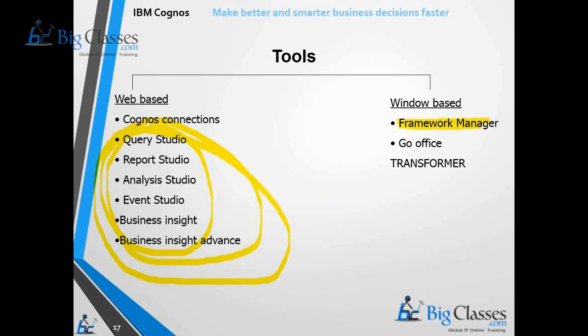We also have one more Windows-based application: GO Office. We need to install GO Office on our machines so we can import Cognos reports directly into MS Office applications like Excel and Word, and do further changes if needed.